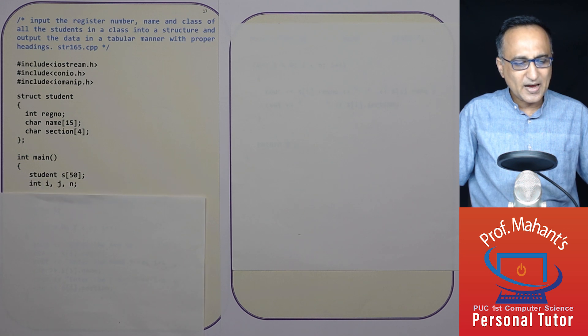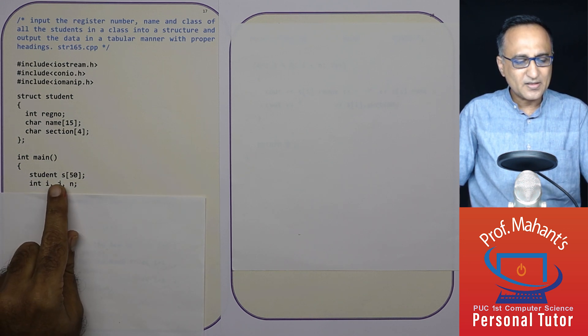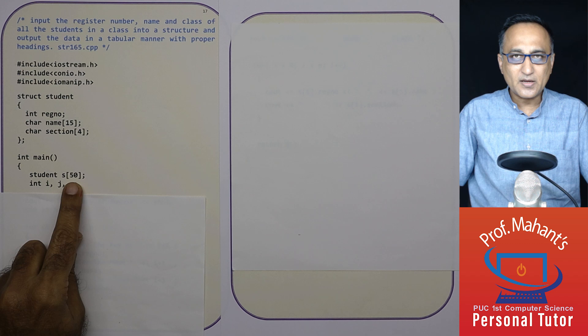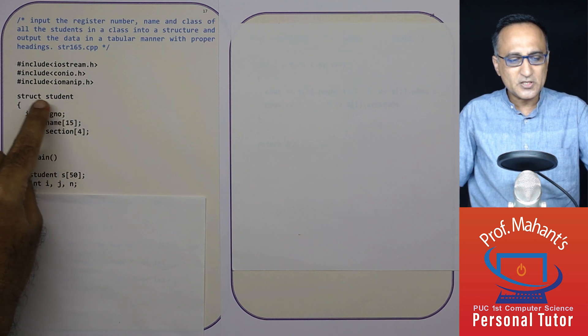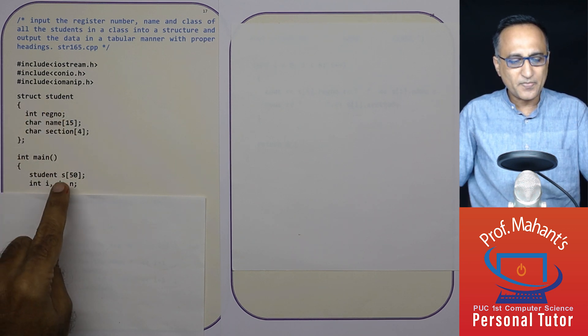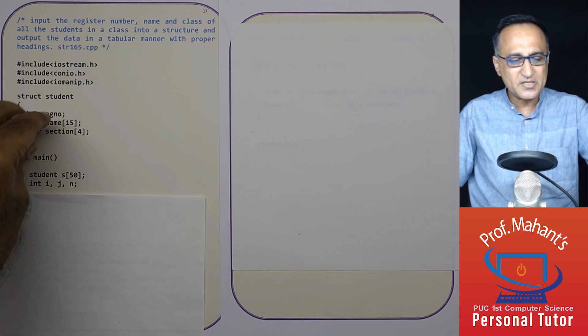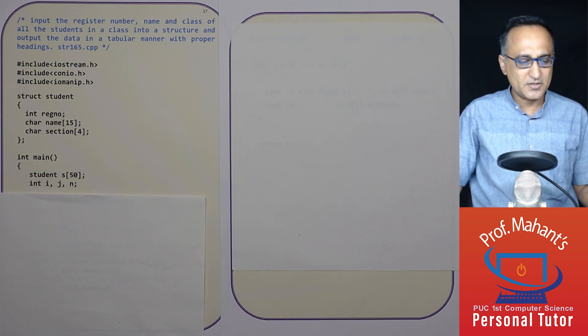So what I'm doing here is I have declared an array s of ability to hold 50 students data of the type student. So of this particular model or prototype, I have declared s of 50. That means I can store data for 50 students.